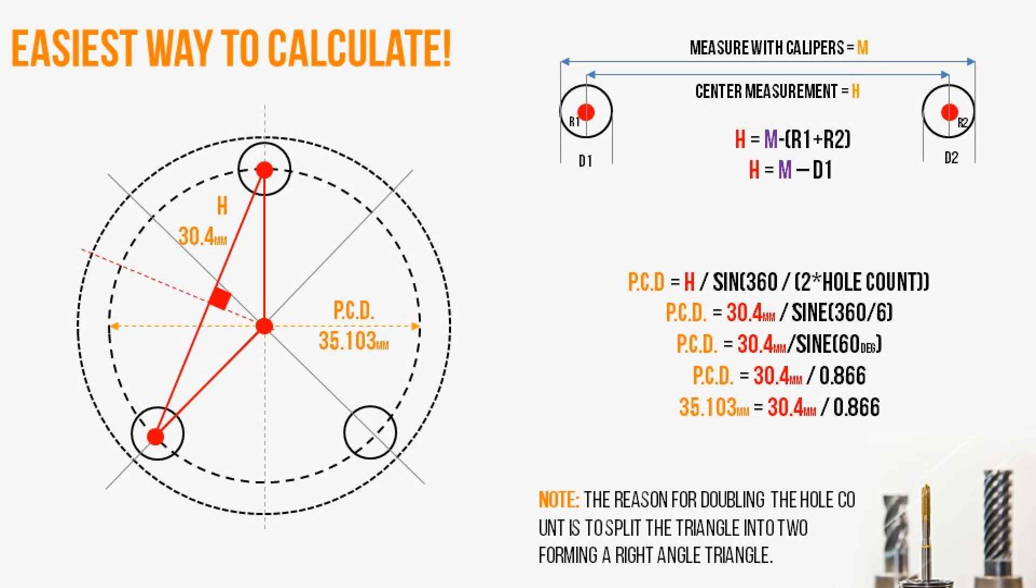Then we take the sine of that, divide that into our distance, and Bob's your uncle, we've got the calculation. Pretty simple and straightforward. Let's take a look at how we would do this in Excel.